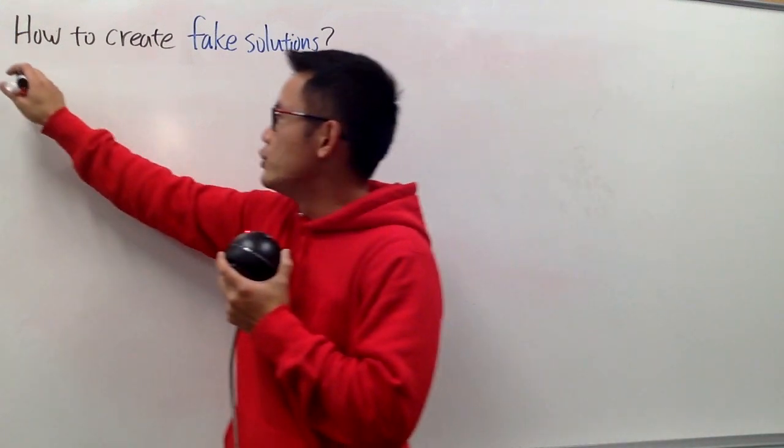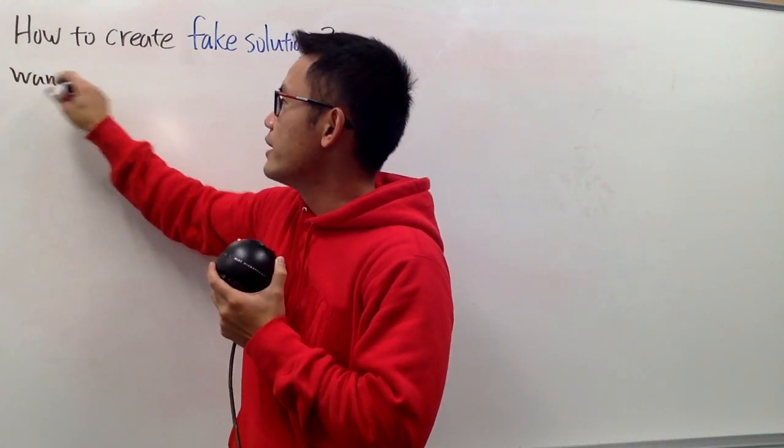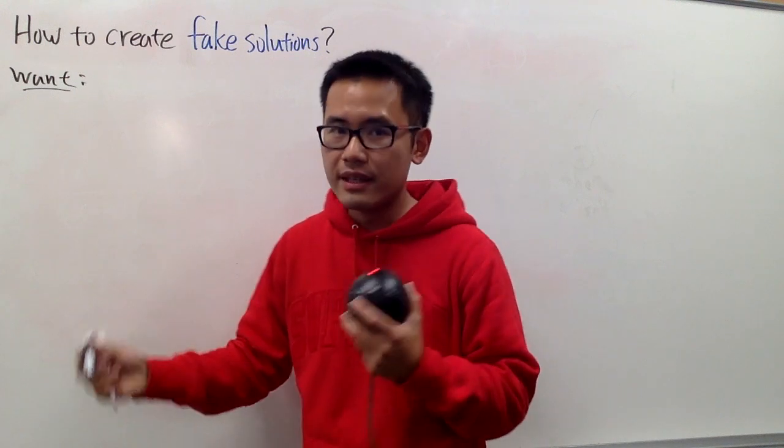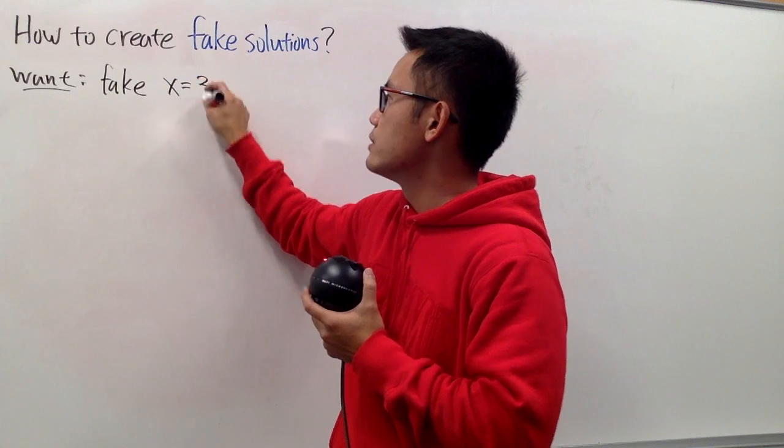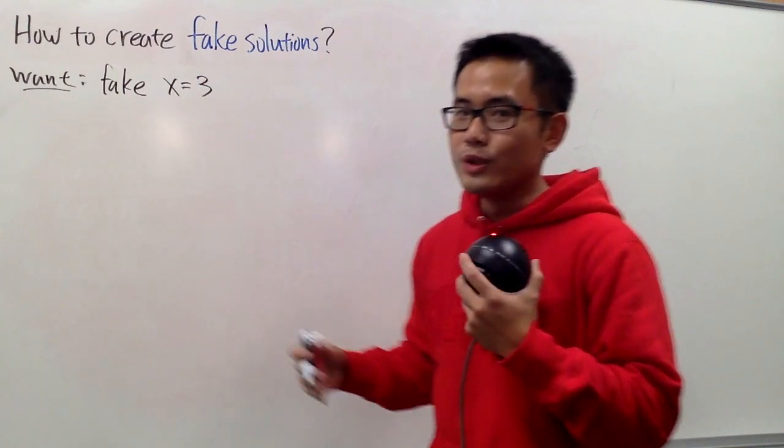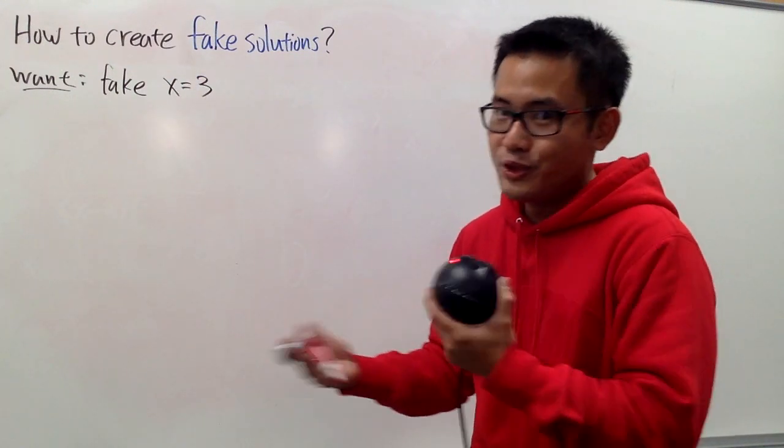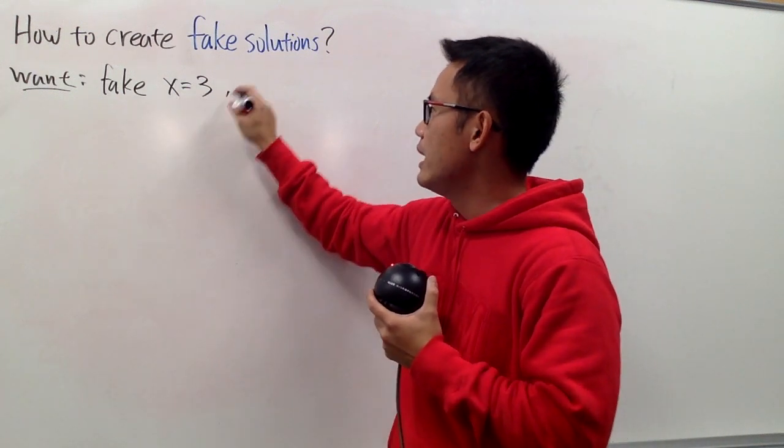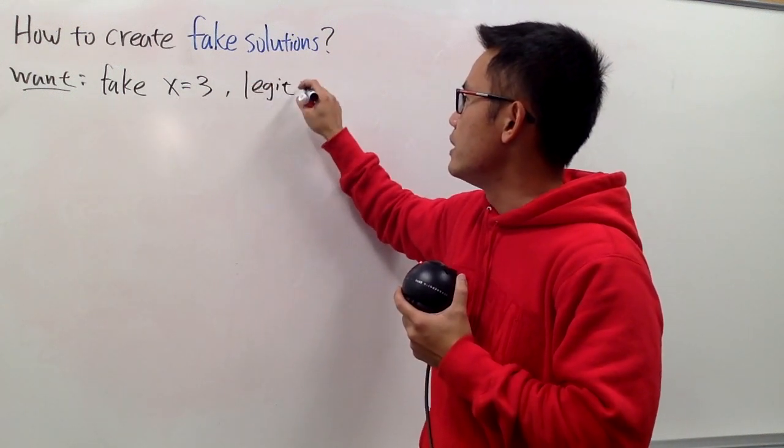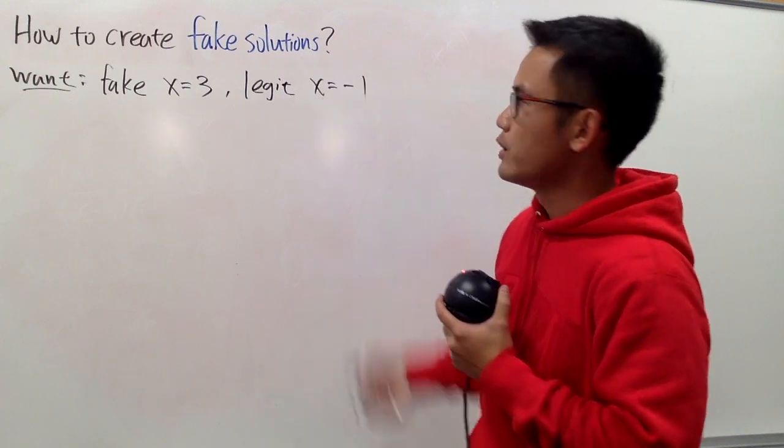So first of all, we just have to decide what solution you want it to be fake. Let's say I want a fake solution to be x equals 3. We should also have a legitimate answer just to be nice. So I want the fake one to be 3 and the legit one to be x equals negative 1.